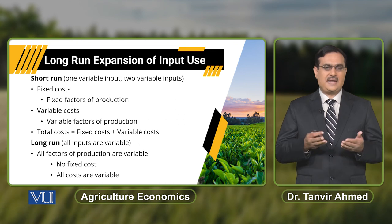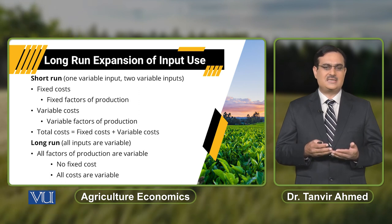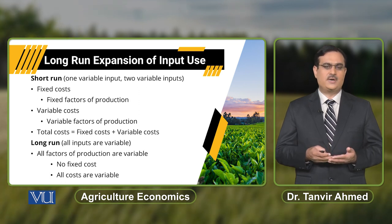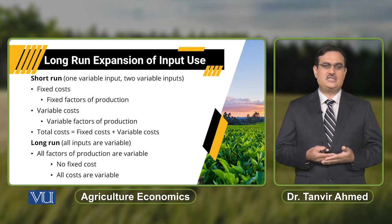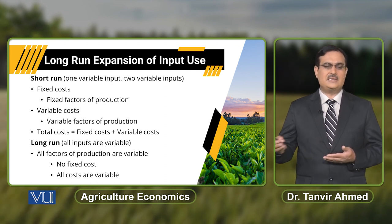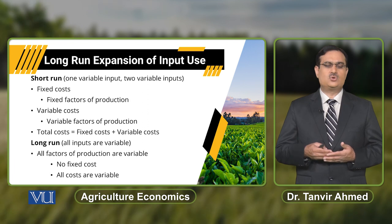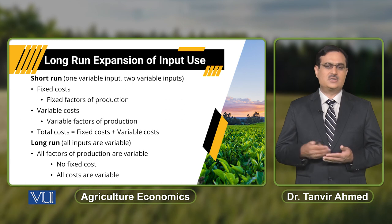When we talk about fixed cost and variable cost, total cost has two components: one is fixed cost and the other is variable cost. Fixed cost does not change with the change in the level of output. Although there is an increase in the level of output, there is no change in fixed cost, and this fixed cost is parallel to the horizontal axis.